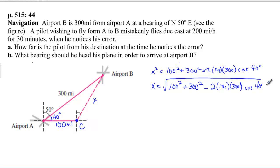And I get 232.459. So, let's go to 232.46 miles. And so, that's how far he is away from airport B. 232.46 miles.